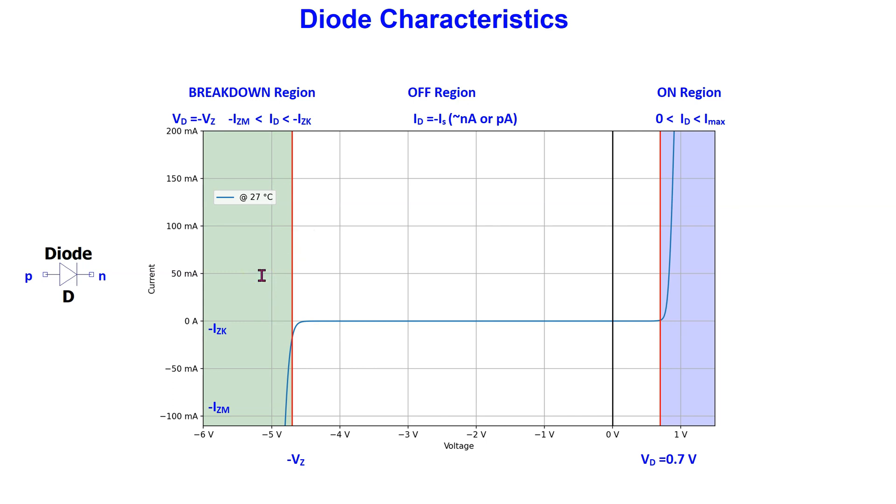In this region, the voltage across the zener diode is minus VZ and the zener current is between a minimum and a maximum value. These values are also specified in the zener diode datasheet.